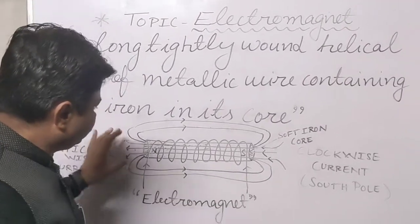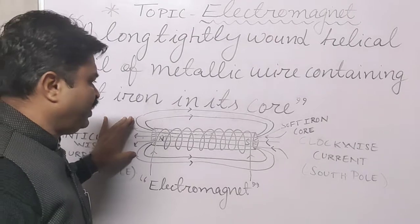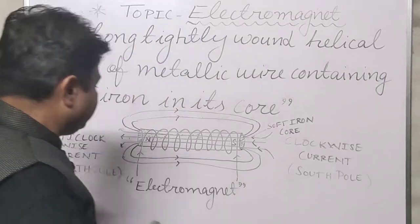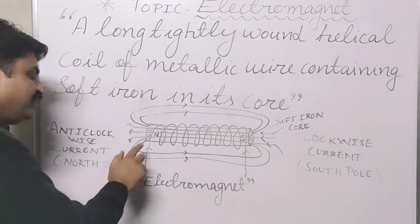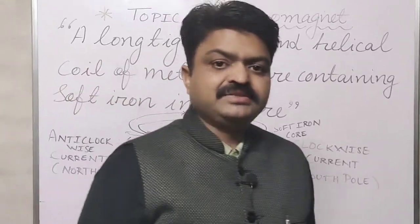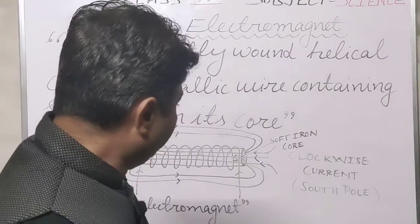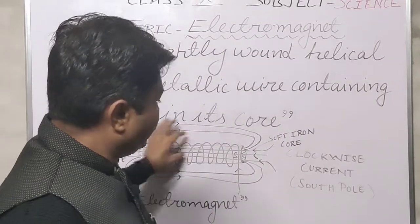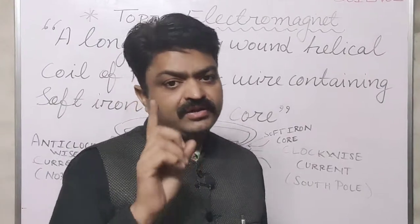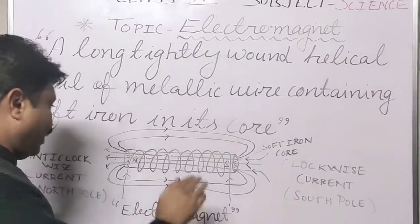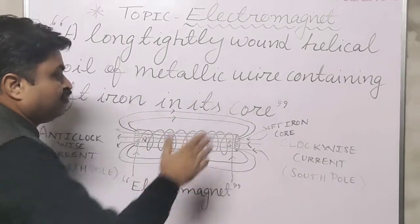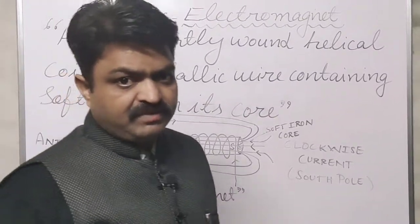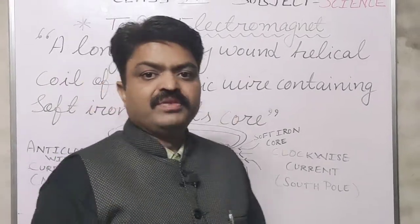It also has a magnetic field like a solenoid or a bar magnet. When the current is passed through the wire, it produces magnetic field lines. Those magnetic field lines move from south to north inside the iron rod or iron core, but outside they move from north to south. Inside, they are uniform in nature, but outside they are non-uniform in nature.